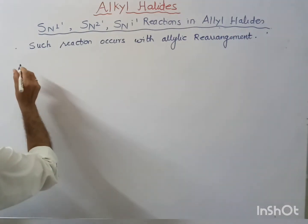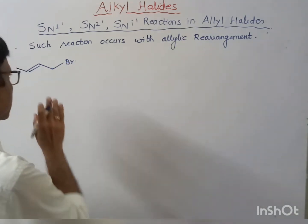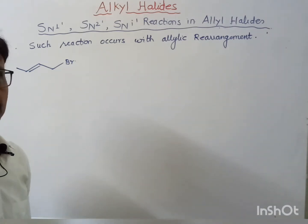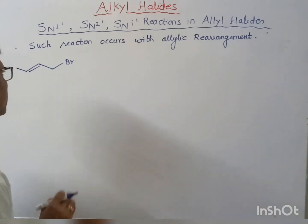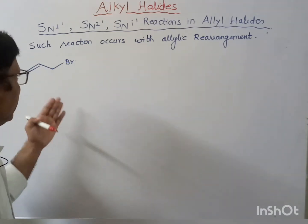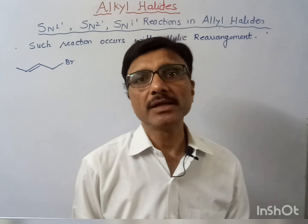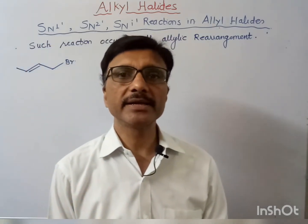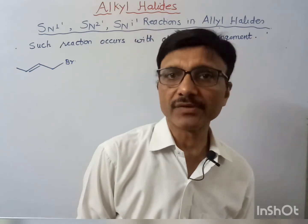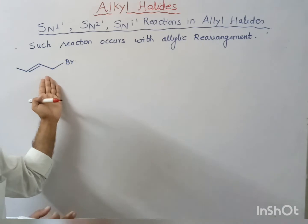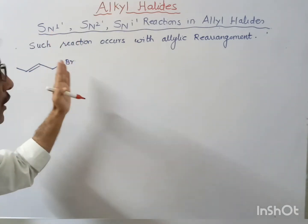Let's take one substrate molecule. Suppose we have this allylic bromide — this is an allylic bromide, but it is primary in nature. The bromine atom is attached to the primary carbon atom, so this is primary in nature. In alkyl halides, the primary alkyl halide gives the SN2 reaction, whereas tertiary alkyl halide easily gives the SN1 reaction. But as this is an allylic halide, though primary in nature, it can also give the SN1 reaction.